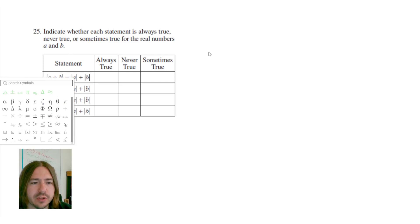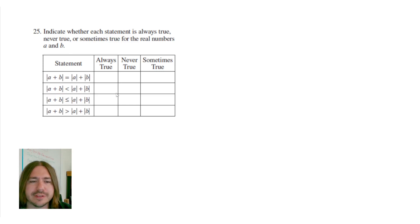So we're assuming A and B are real numbers. They could be any real numbers, positive or negative. What we want to do is go through and see if we can find some examples to see if they're ever true and think through them logically.